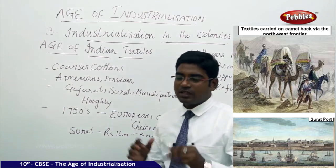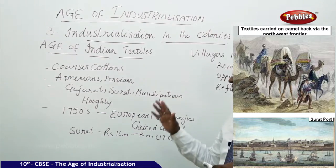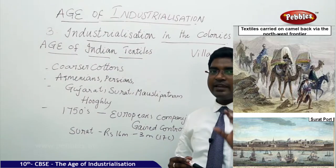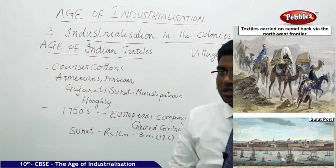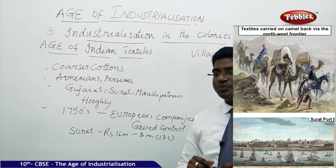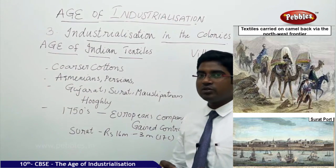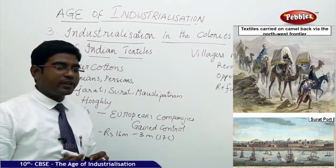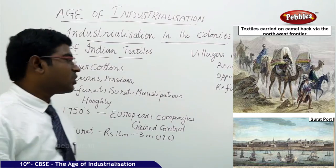Until the 1750s, Indian traders were the dominant traders selling their cotton abroad. But in the 1750s, Europeans started to arrive in India in a very large manner. They initially got many concessions from the local courts and later established a monopoly on trading. In Surat, prior to the arrival of the Europeans, the trade income was around 16 million rupees, which was slashed down to 3 million rupees by the end of the 17th century — a drastic fall in trade.